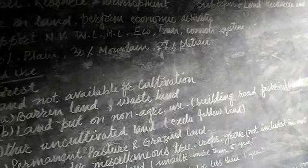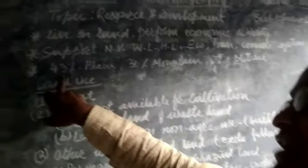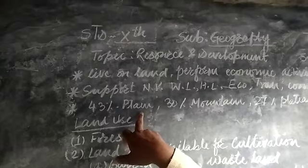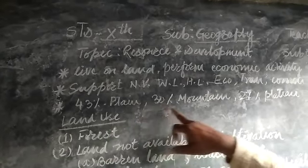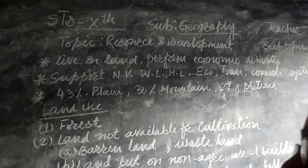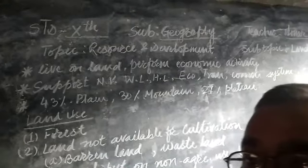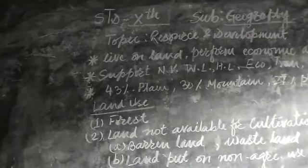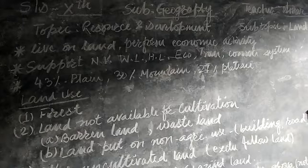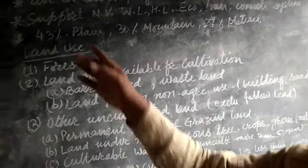If we observe the land utilization pattern of our country India, approximately 43 percent of the country is covered by plains, 30 percent is covered by mountains, and 27 percent is covered by plateaus. Plains are more suitable for agricultural activity as well as for transportation, economic activities, human habitation, railways, and roadways.